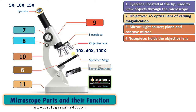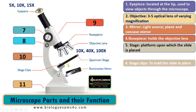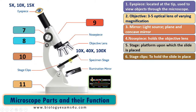The next part is the specimen stage. It is a platform upon which we place the slide with our specimen. The next one is the stage clip. The stage clip holds the slide in place — as you see, we can tilt the slide, and the stage clip helps to keep it intact without changing the position.